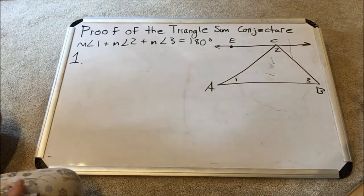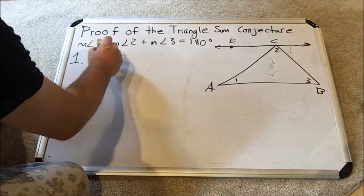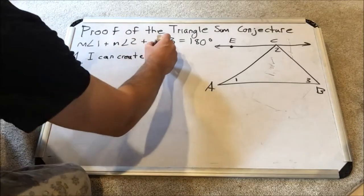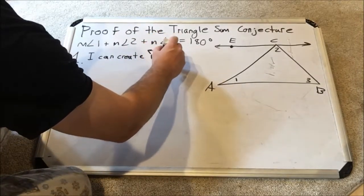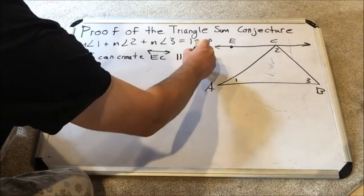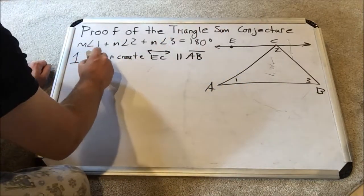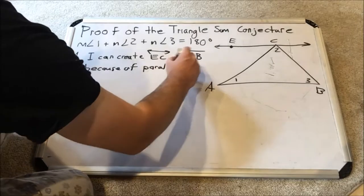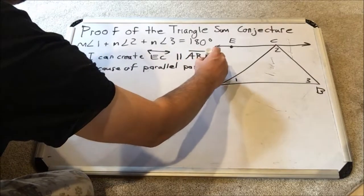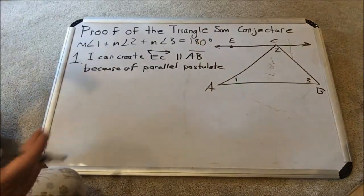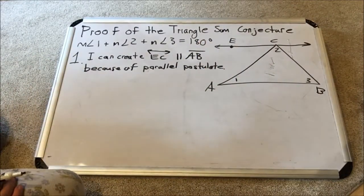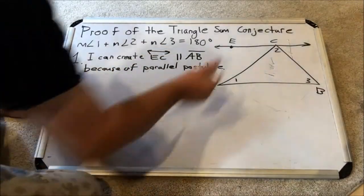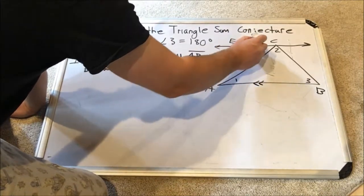So this proof has five steps, and the first step is to list that you can do that. I can create line EC parallel—this is the parallel symbol—to segment AB because of the parallel postulate. Just the fact that I could do that is necessary, and so I actually construct that line. I didn't really construct it here, I sketched it, but it can be constructed and it is parallel to line AB.